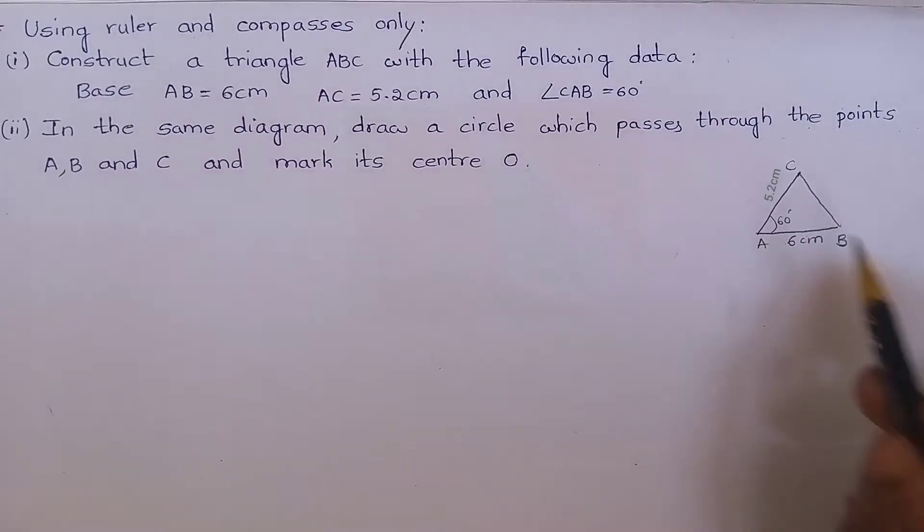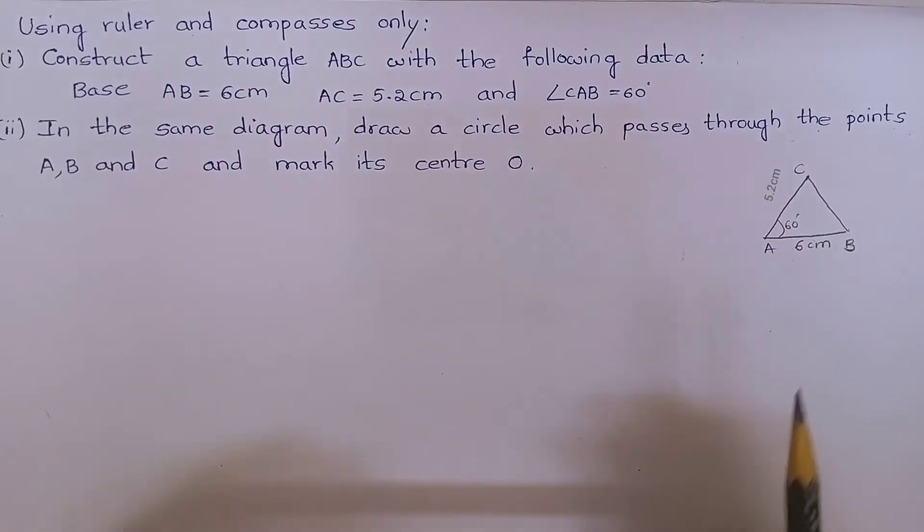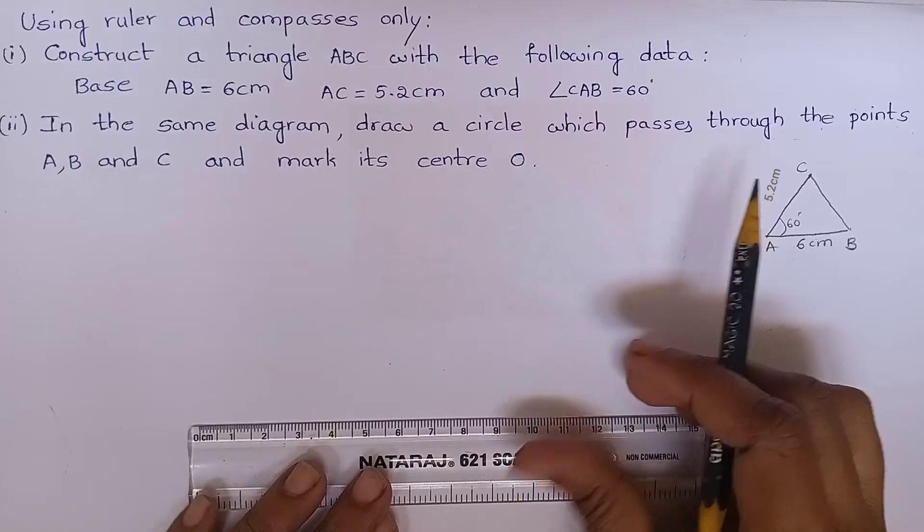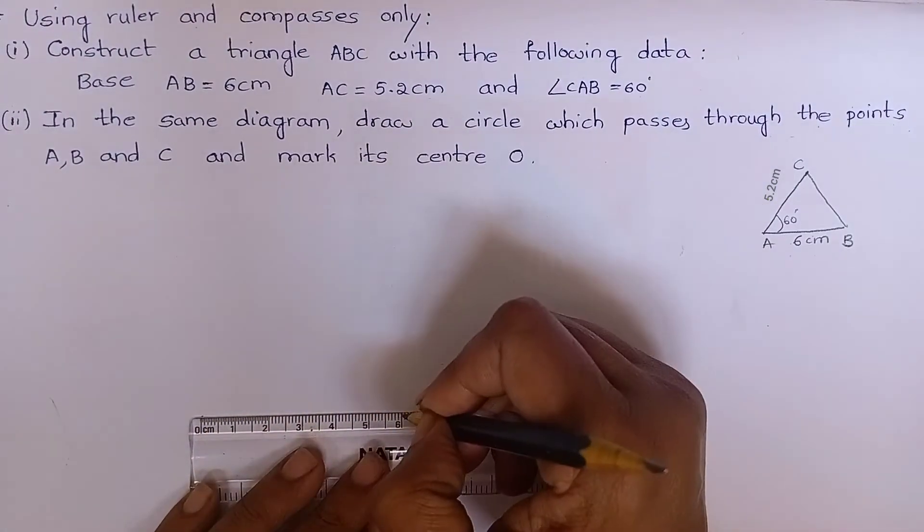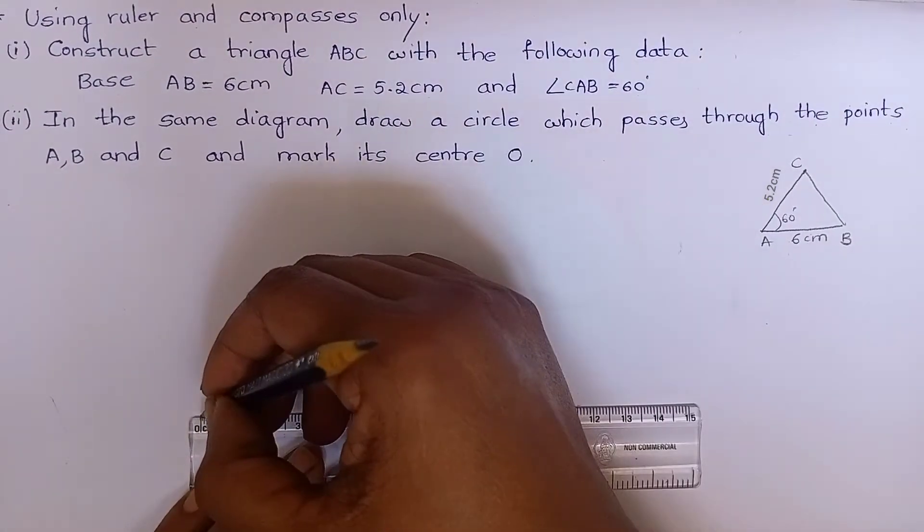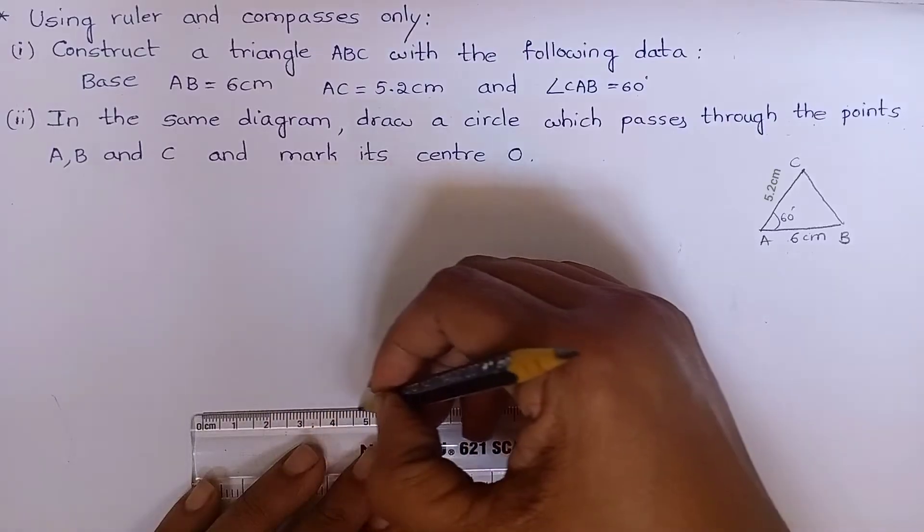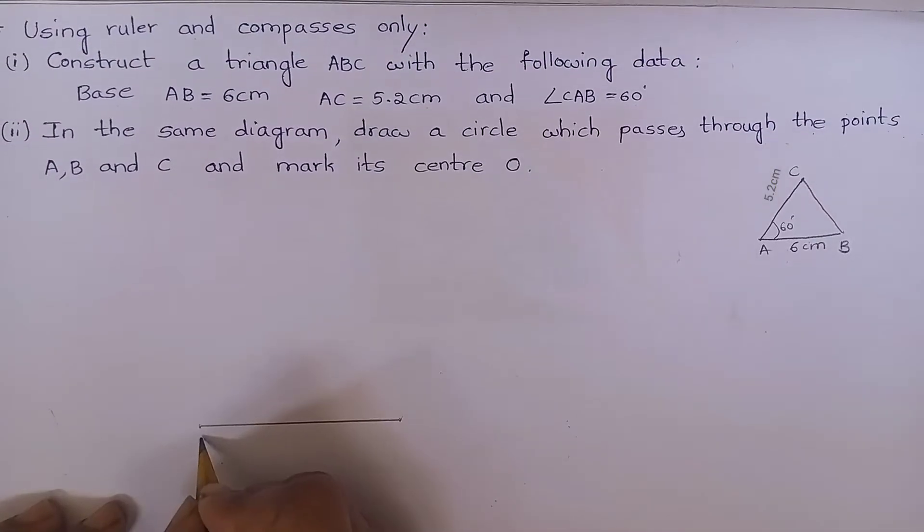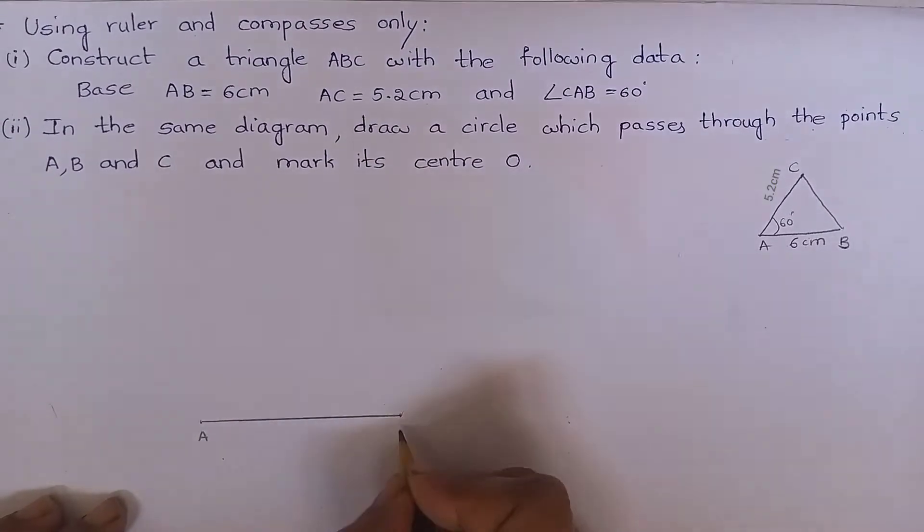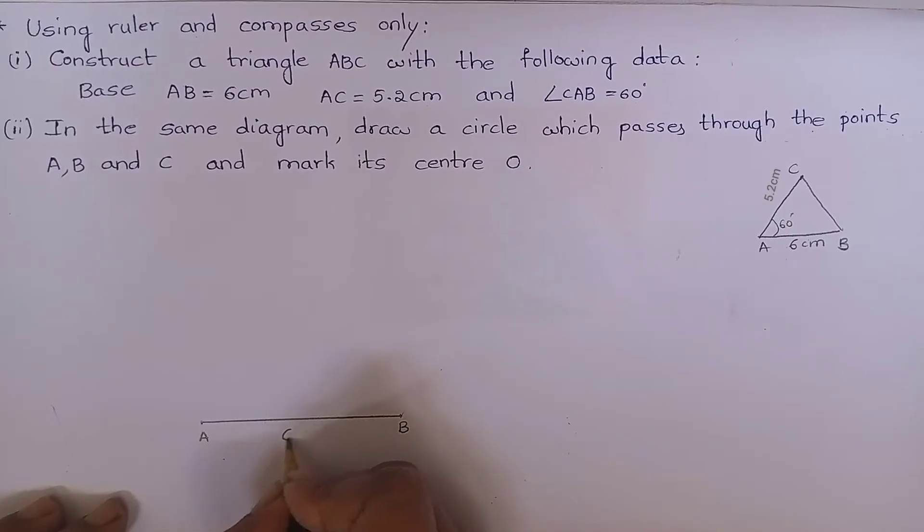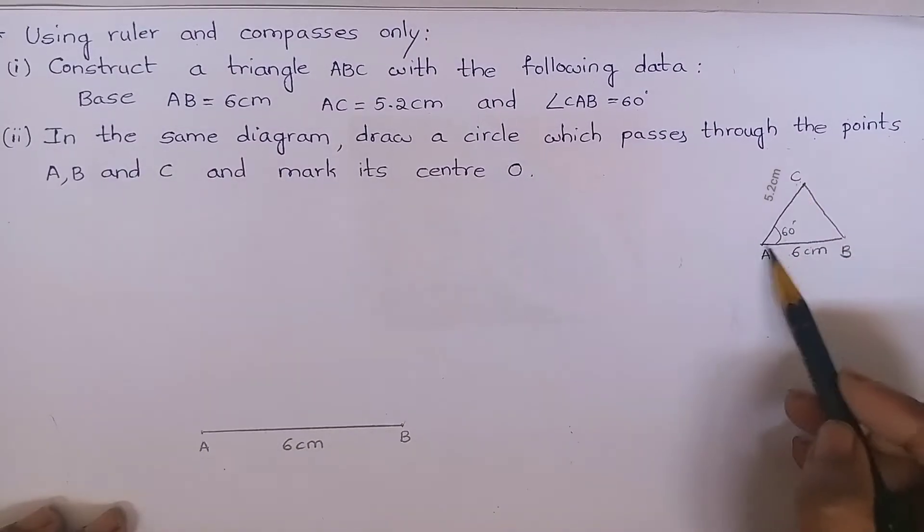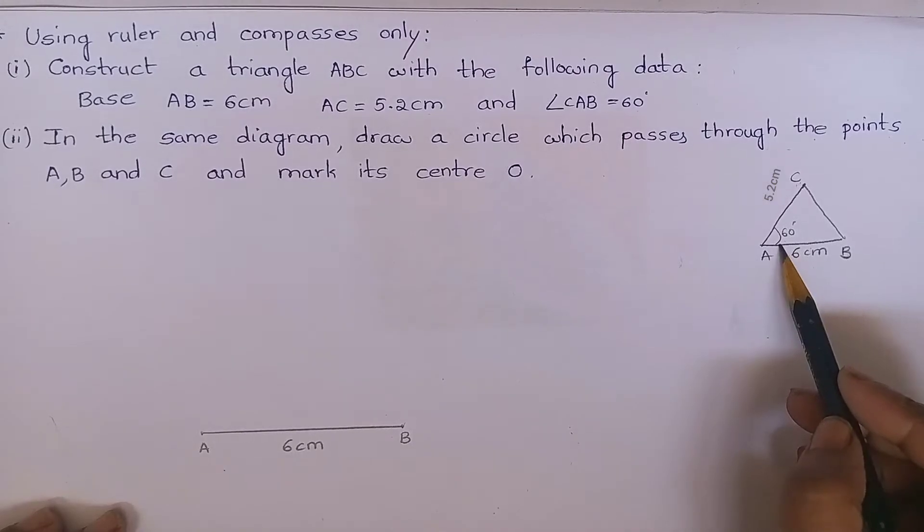First let me draw AB equal to 6 centimeters. AB is 6 centimeters. Angle CAB is equal to 60 degrees. Use the compass.